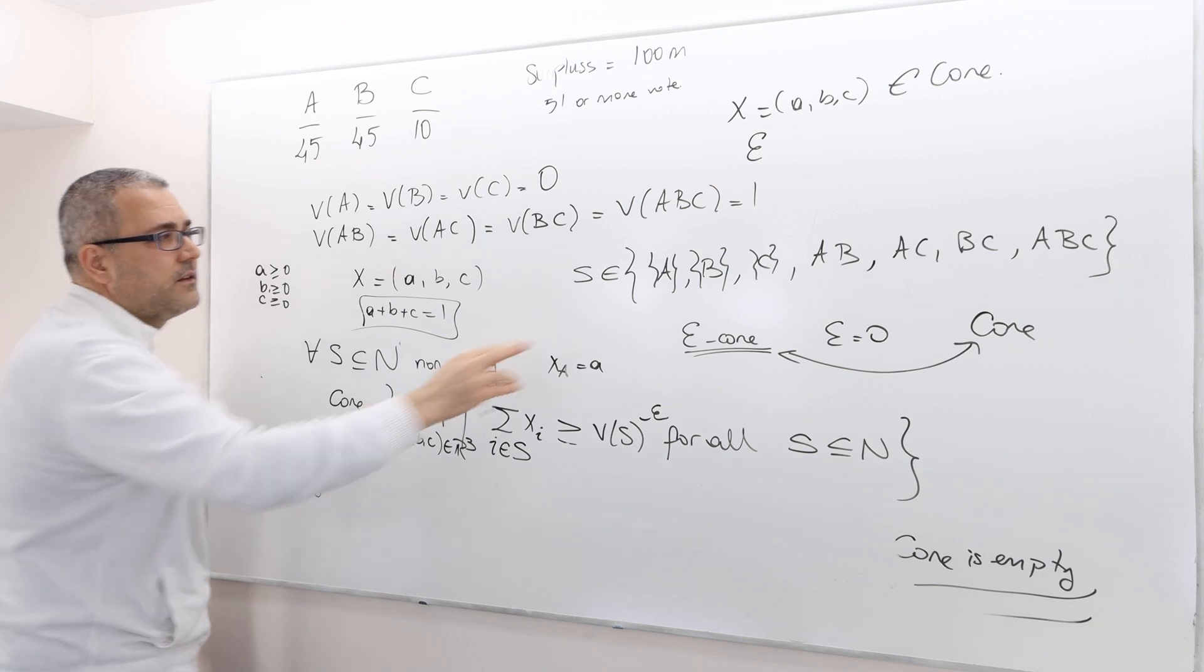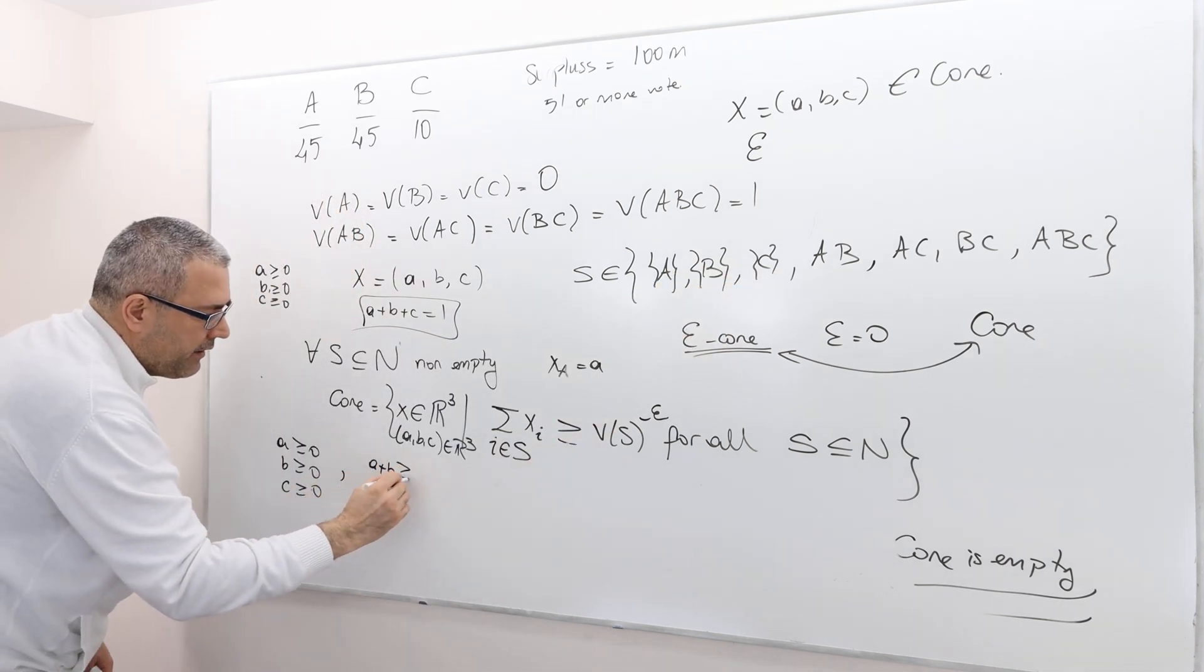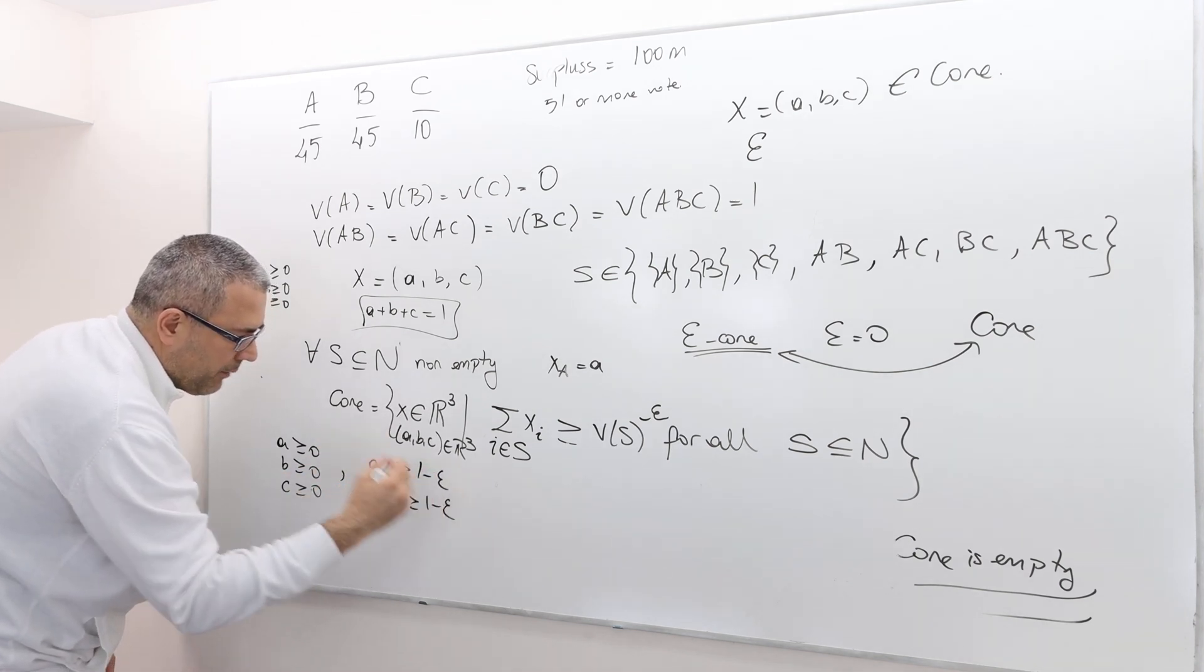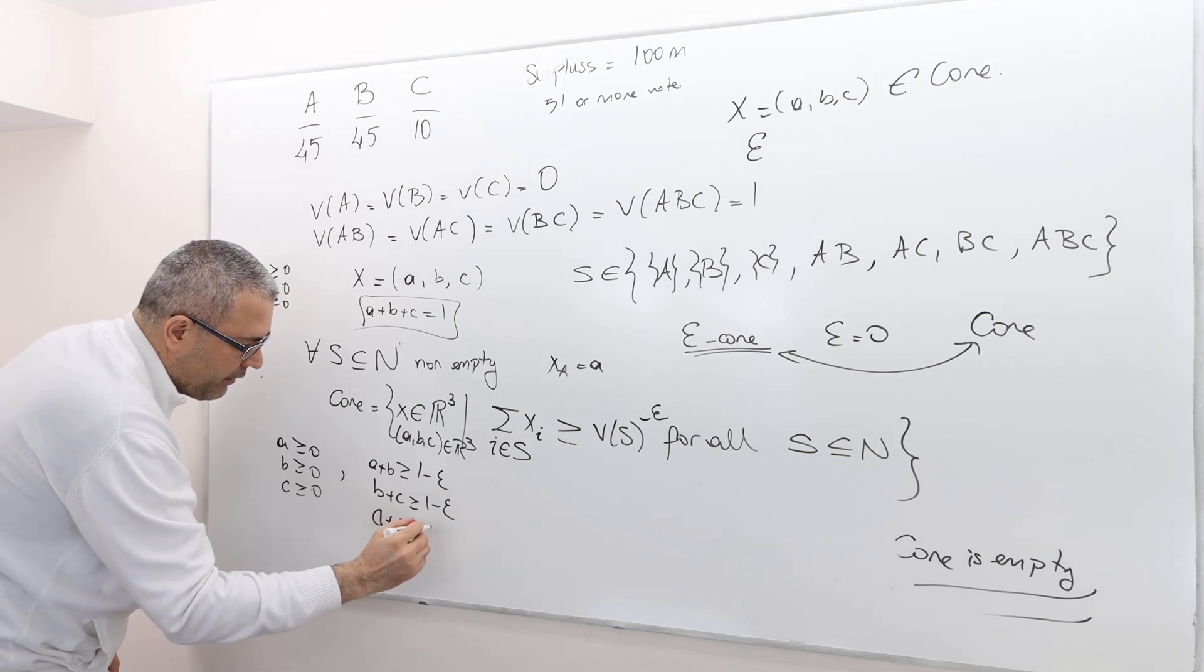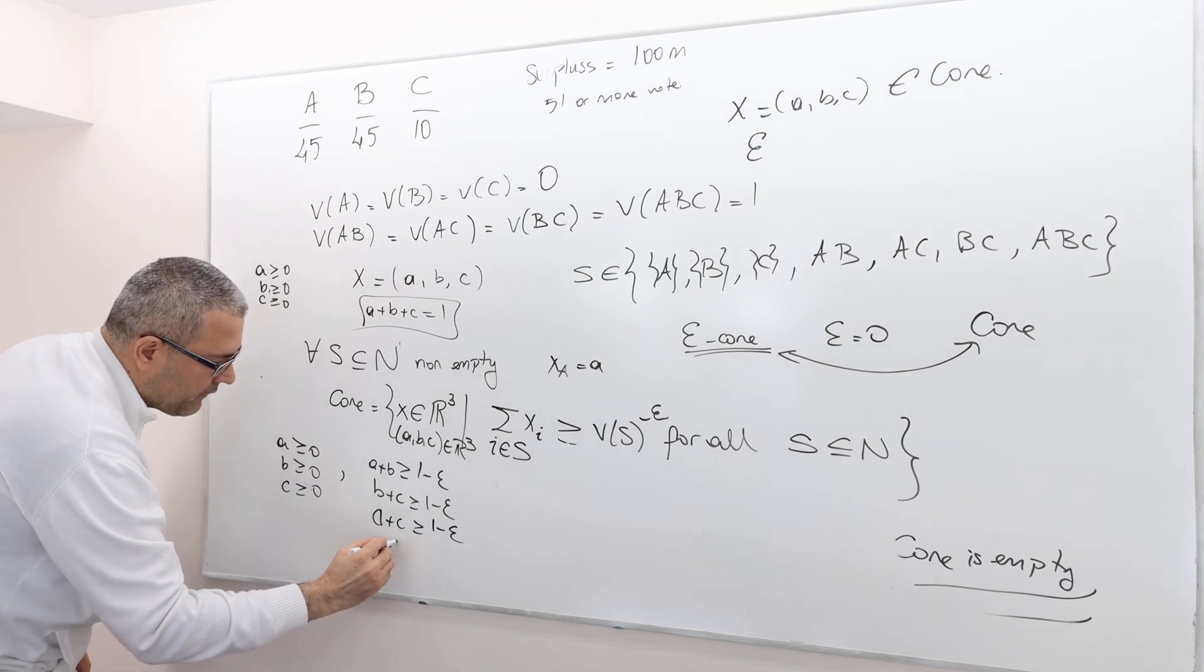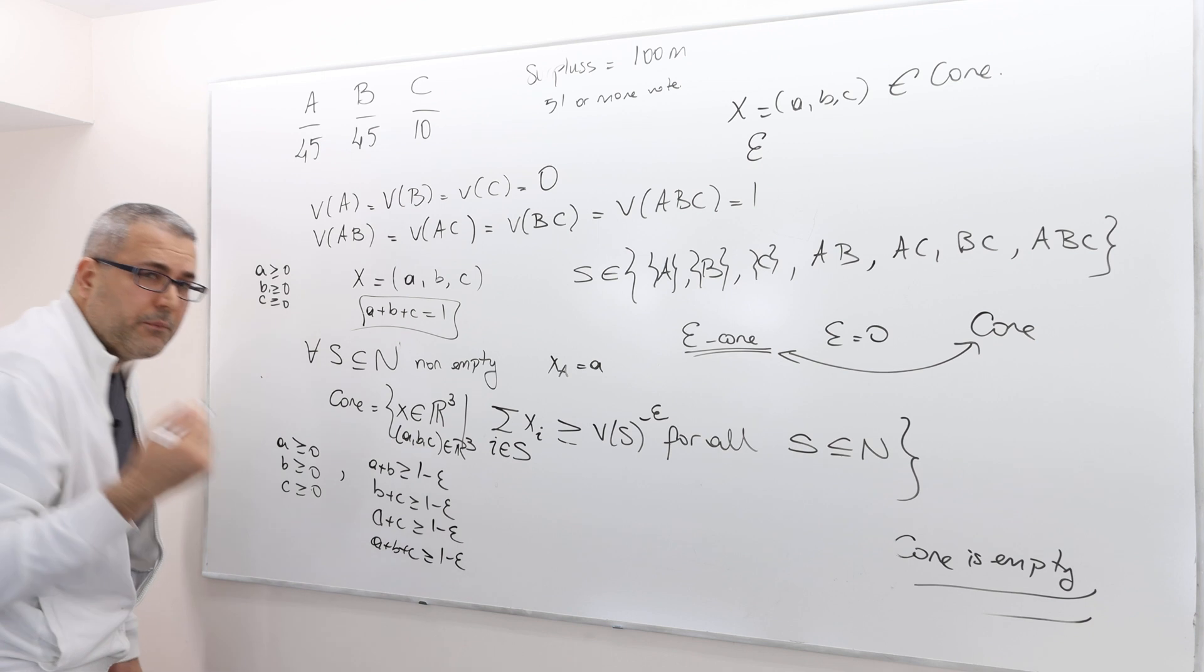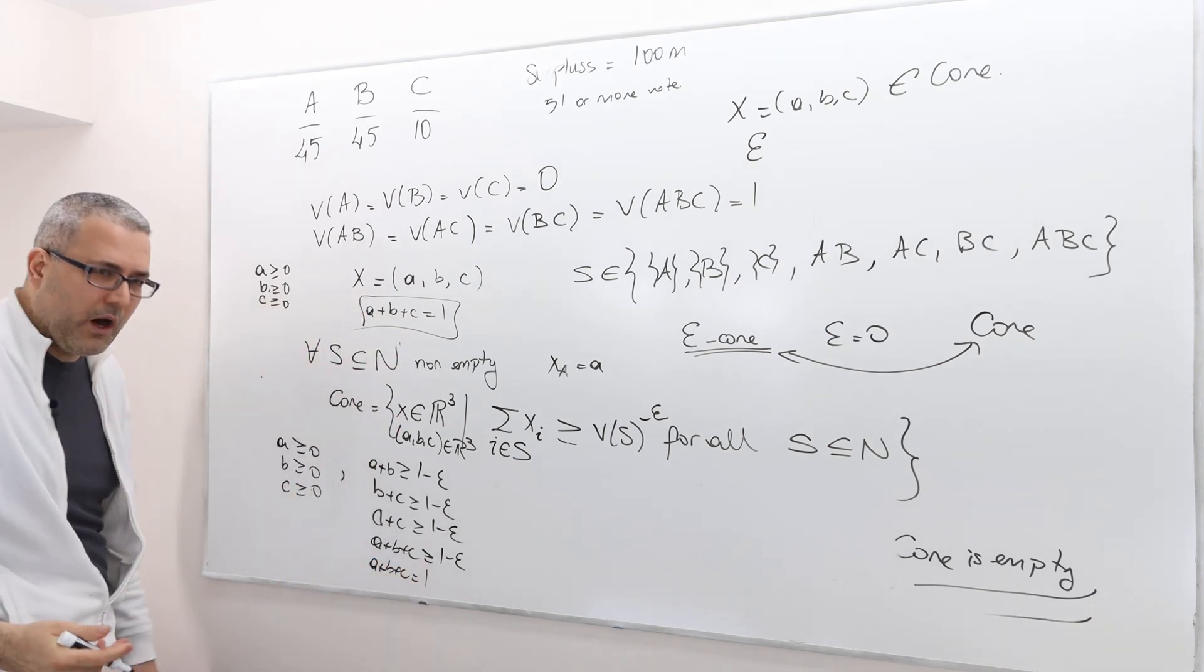Okay, what else? The doubletons, A, B. So A plus B must be greater than or equal to 1 minus epsilon. B plus C greater than or equal to 1 minus epsilon. And finally, A plus C greater than or equal to 1 minus epsilon. And then A plus B plus C must be greater than or equal to 1 minus epsilon. And then don't forget the feasibility. A plus B plus C has to be equal to 1.